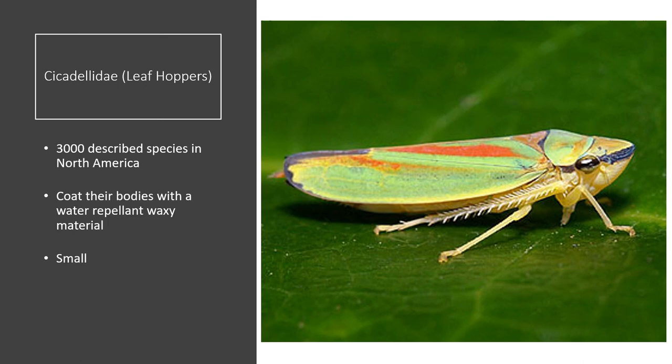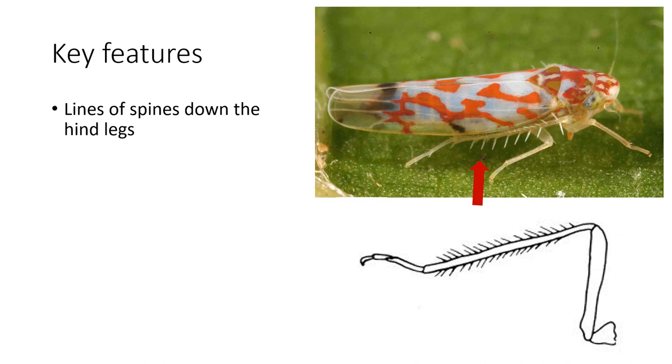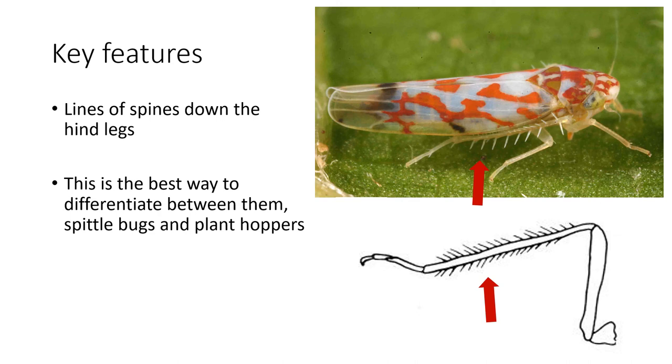Cicadellidae — leafhoppers. There are 3,000 described species in North America. They coat their bodies with a water-repellent waxy material and are typically very small. Key features: they have lines of spines down their hind leg, unlike the spittlebug which has a row of spines around its leg. This is the best way to differentiate them from spittlebugs and planthoppers. They are small and also tent their wings over their backs.